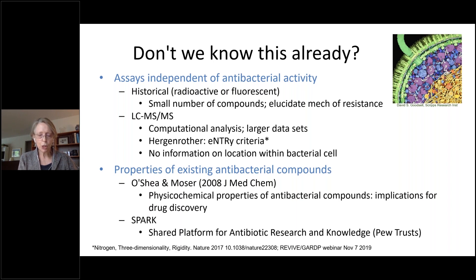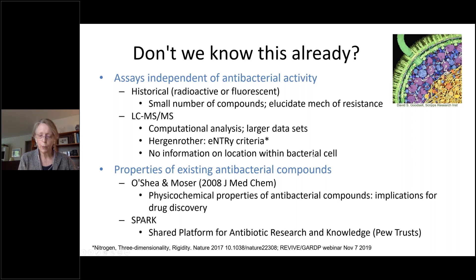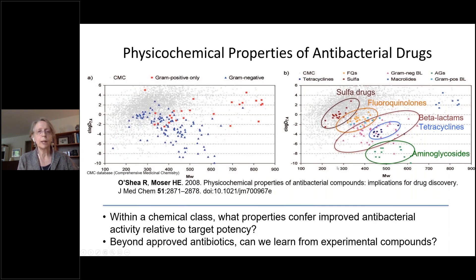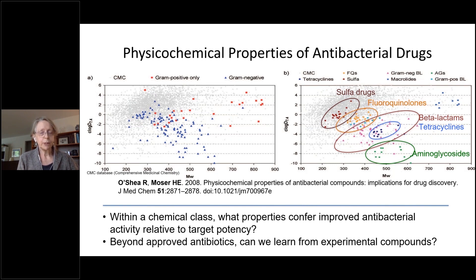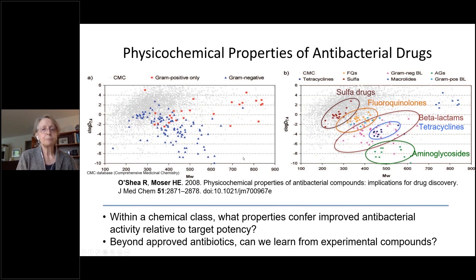However, the few large LC-MS studies published so far do not provide information on where the compound is located within the bacterial cell. You may ask, why is this necessary at all? We have hundreds of antibiotics. Don't they tell us what are the right physicochemical properties for getting into bacteria? And yes, up to a point, we do know a lot. Many of you are probably familiar with the study by O'Shea and Moser from which this figure was taken.